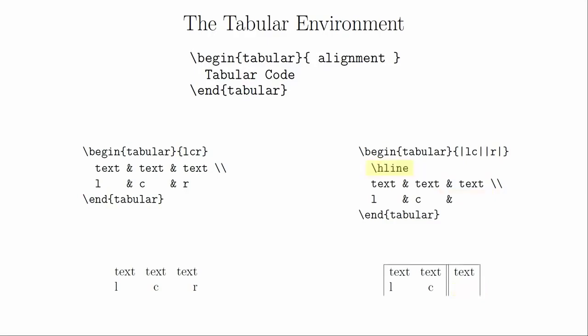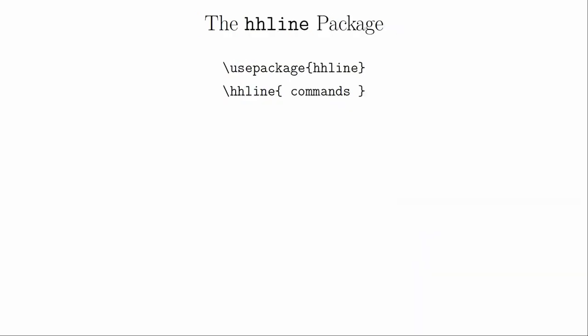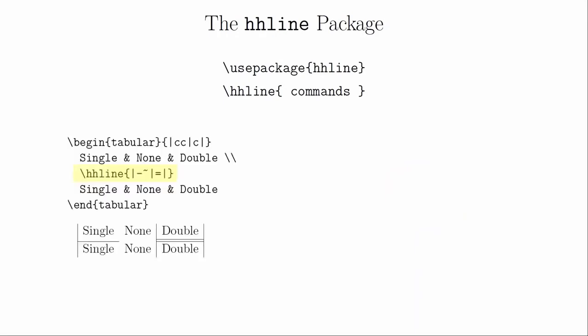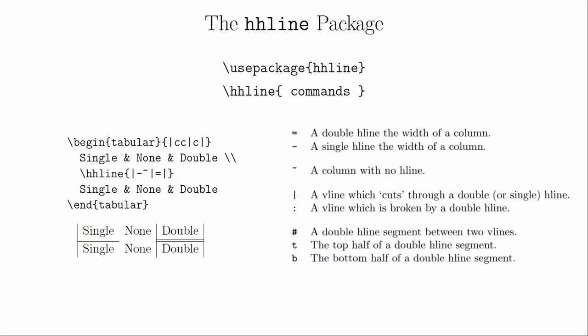To create a horizontal line through the table, use the \hline command at the start of the row directly below where you want the line. To create a line at the bottom of the table, you will need to create one empty row at the end with just the \hline command. A double line can be created by using two \hline commands. If you want to get fancier with your horizontal lines, you will have to use the hhline package. With this package, instead of calling \hline, you call \hhline and specify how exactly you want the line drawn: a dash gives a single line, an equal sign gives a double line, and a tilde creates a gap.